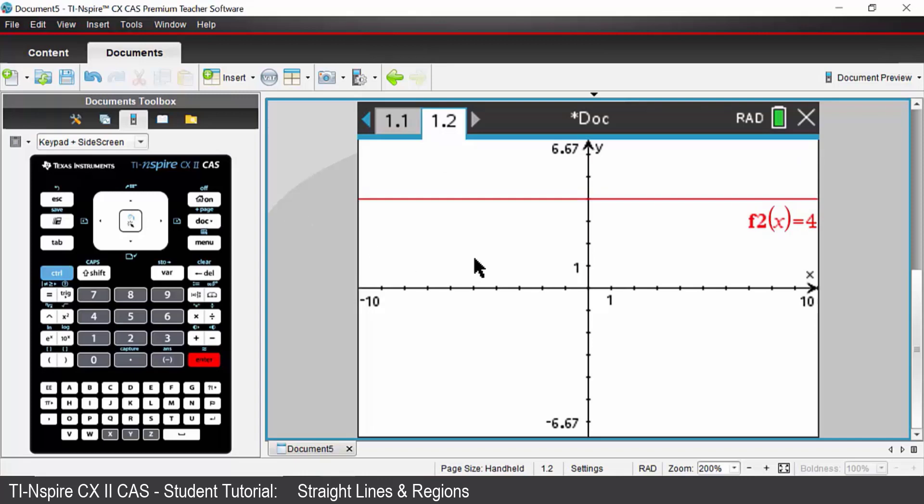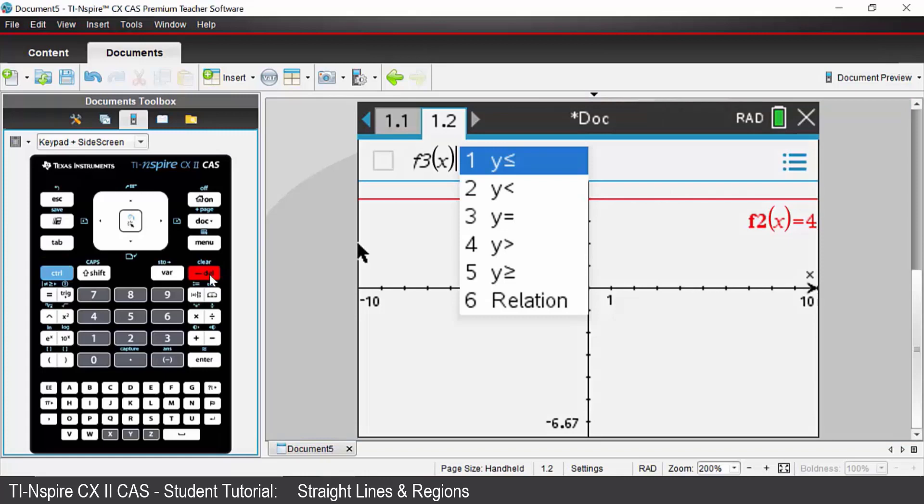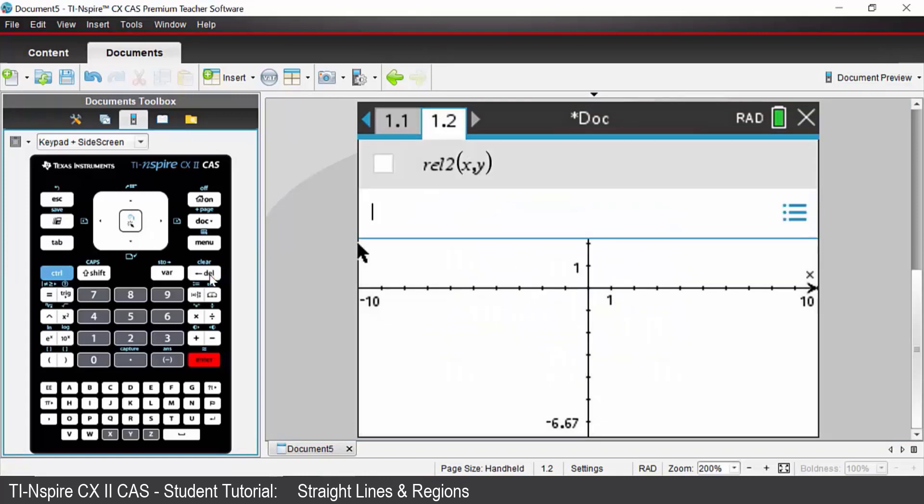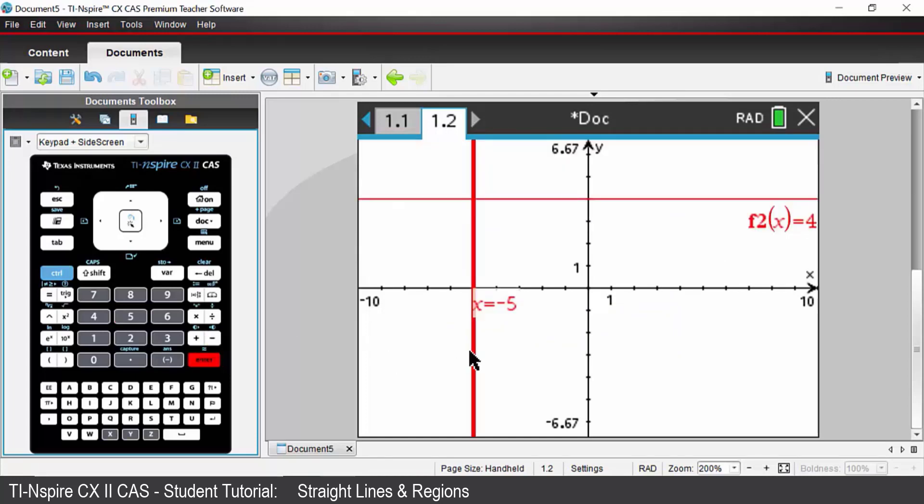We're going to graph a vertical line now. Press tab and it takes you back into the function entry box. Press the delete or your backspace key on your keyboard. Come down to relation again, and to enter your vertical line let's type in x equals negative 5. Press enter and you've got your vertical line passing through x equals negative 5.